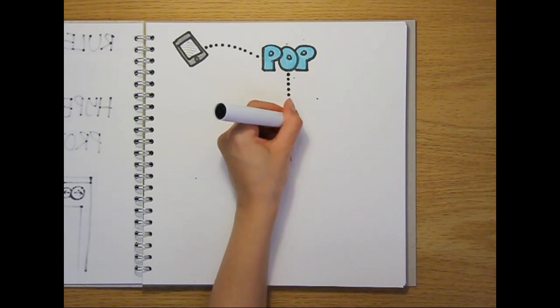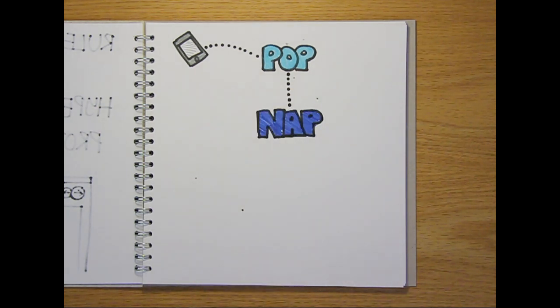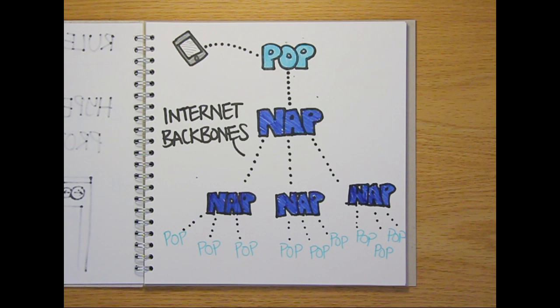All POPs are connected to network access points, or NAPs. Then these NAPs all over the world are linked together through an ultra-fast connection called the internet backbone.